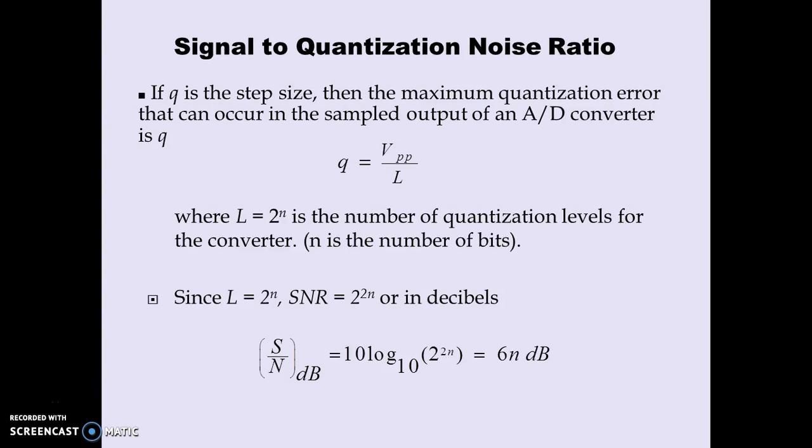The SNR can also be expressed in dB. Replacing L with 2ⁿ (since L must be a power of 2 to assign binary codes to each quantization state), SNR in dB becomes 6n dB, where n is the number of bits required.